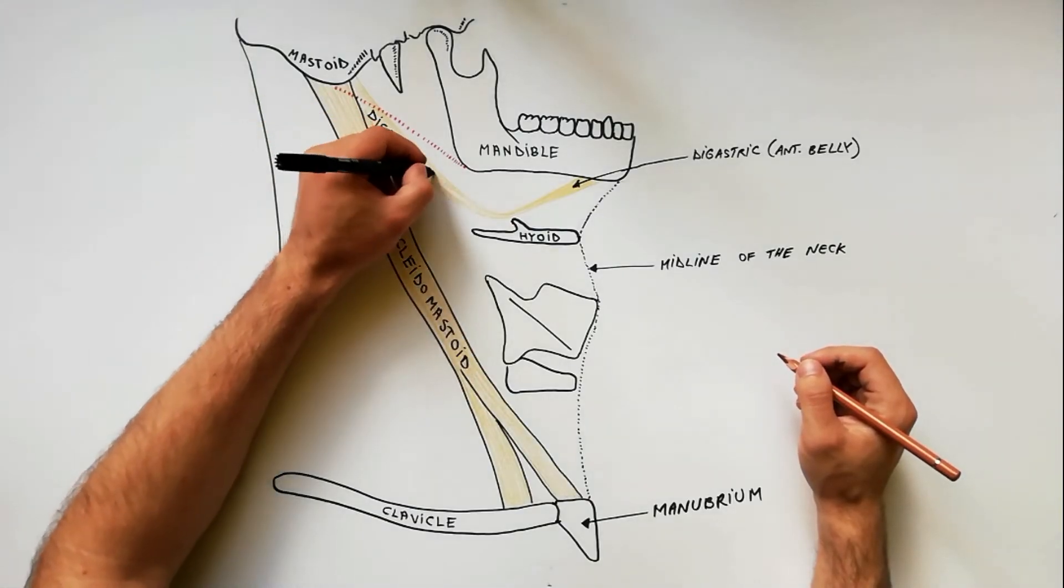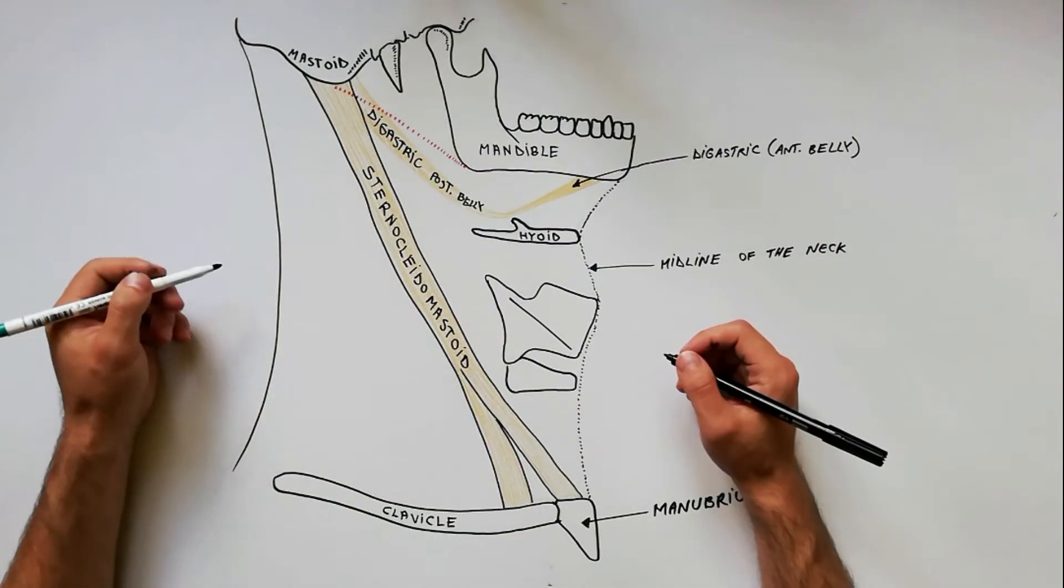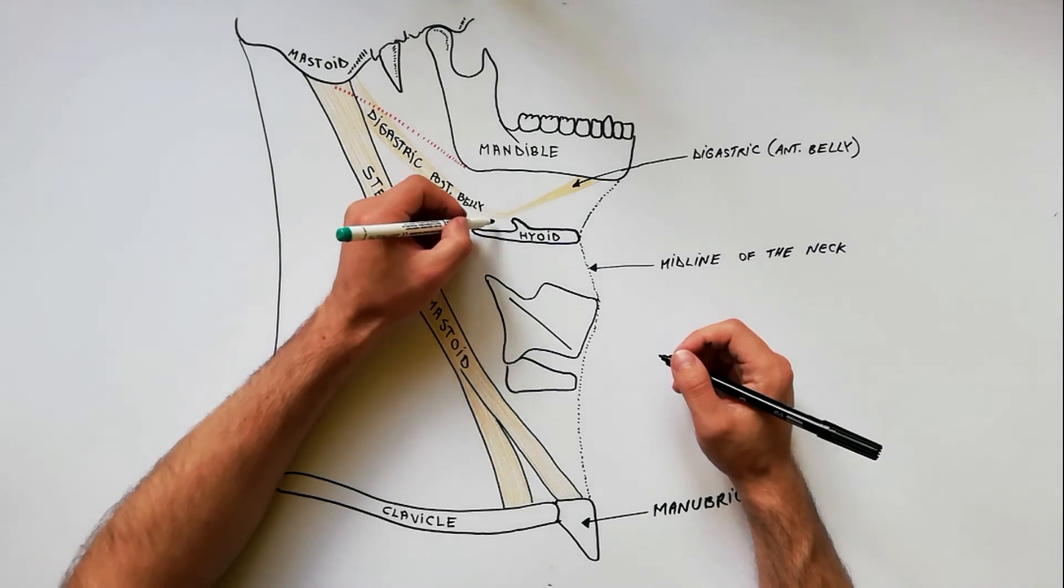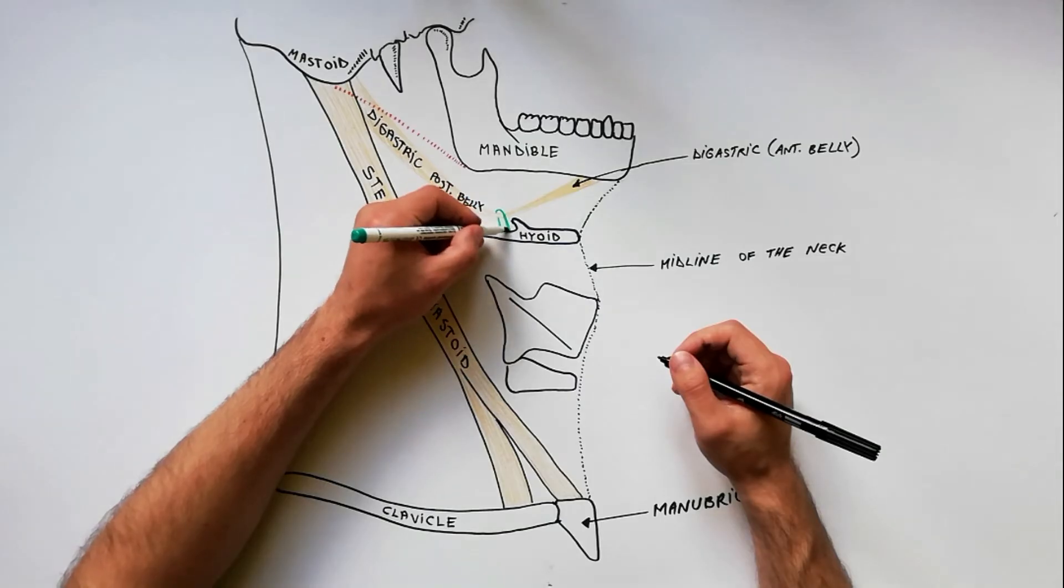Those two bellies are united by the intermediate tendon which is held in connection with the greater cornu of the hyoid bone by a fibrous loop.